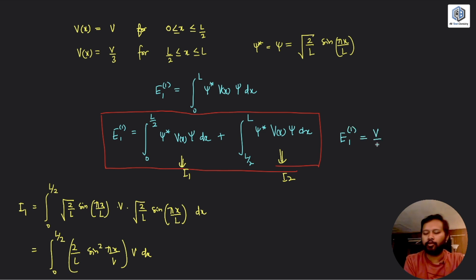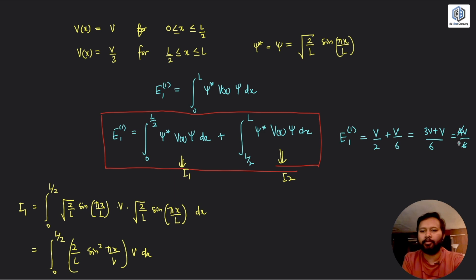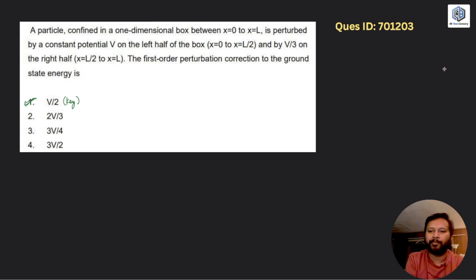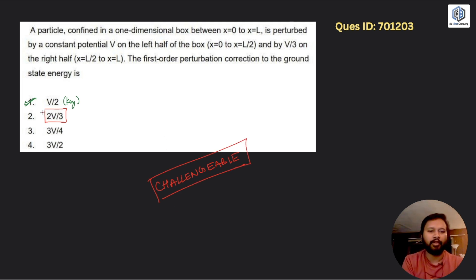The total first-order energy correction is I₁ + I₂ = V/2 + V/6. The LCM is 6, giving 3V/6 + V/6 = 4V/6 = 2V/3. So the correct answer is 2V/3, which is option 2. This is definitely a challengeable question. If you attempted this and got option 2, you should challenge it and will certainly get marks.